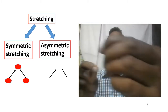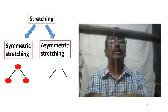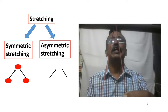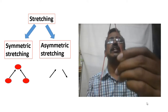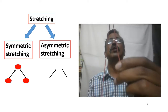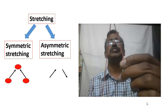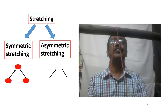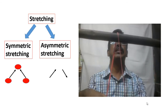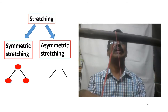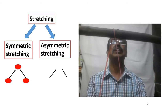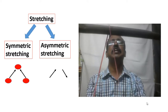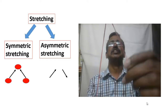The second type of stretching is asymmetric stretching. Here, when the length of one bond increases, the length of the other bond decreases. When the length of this bond increases, the length of the other bond decreases. This is called asymmetric stretching.